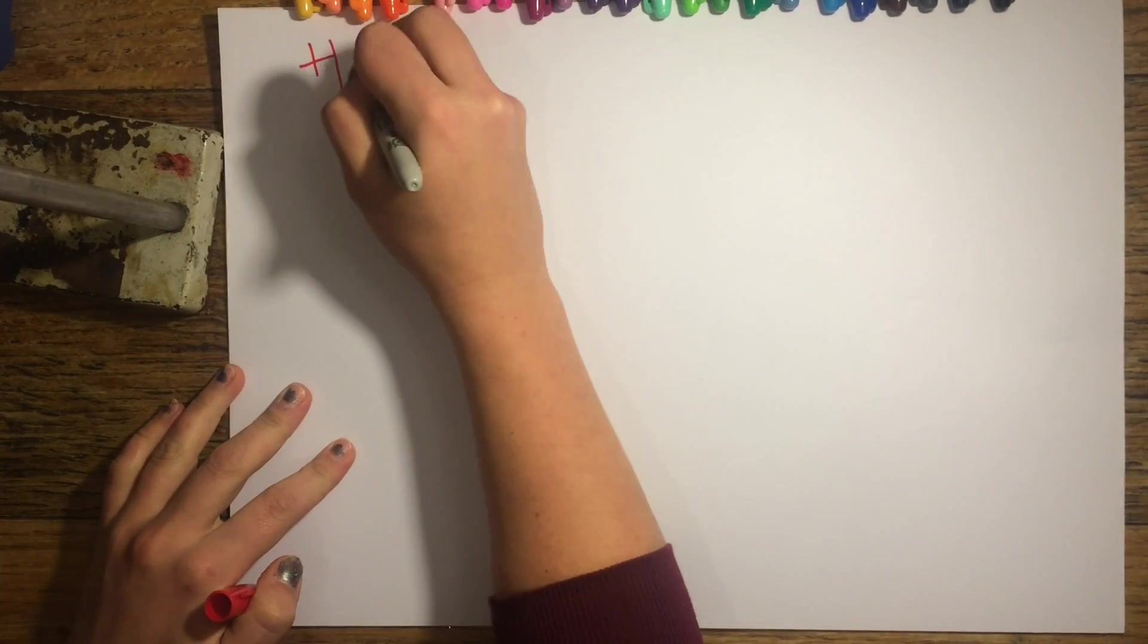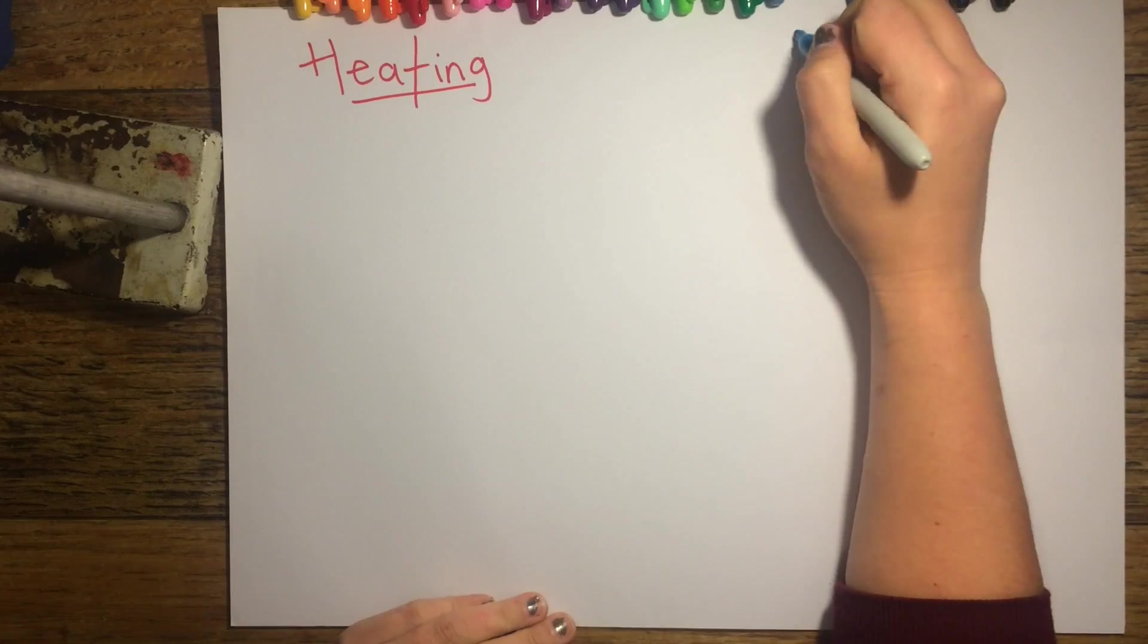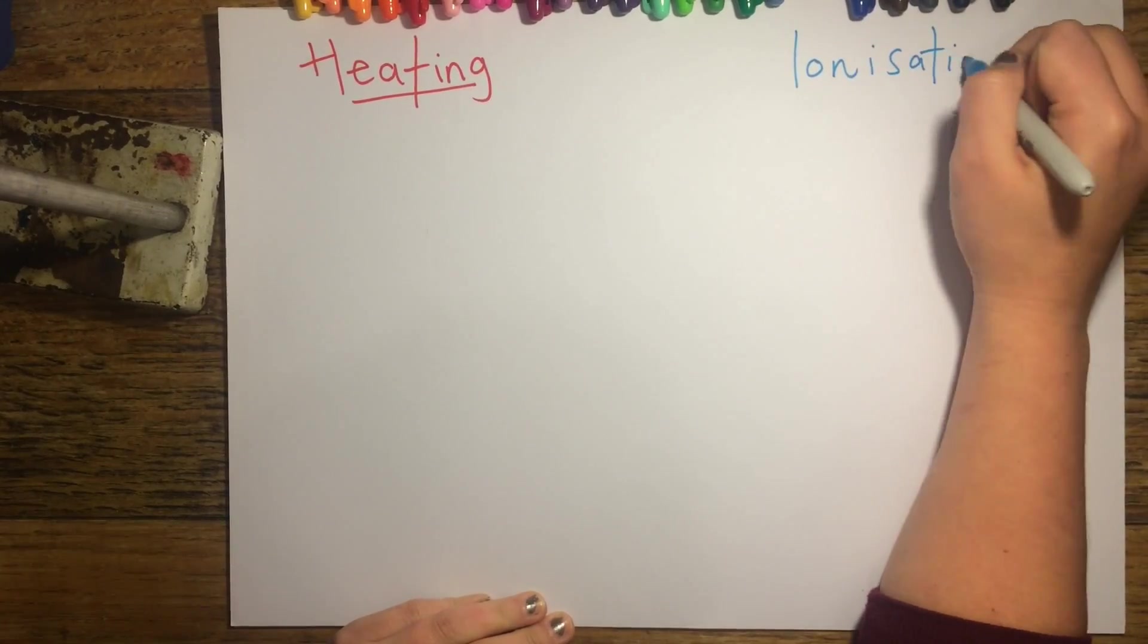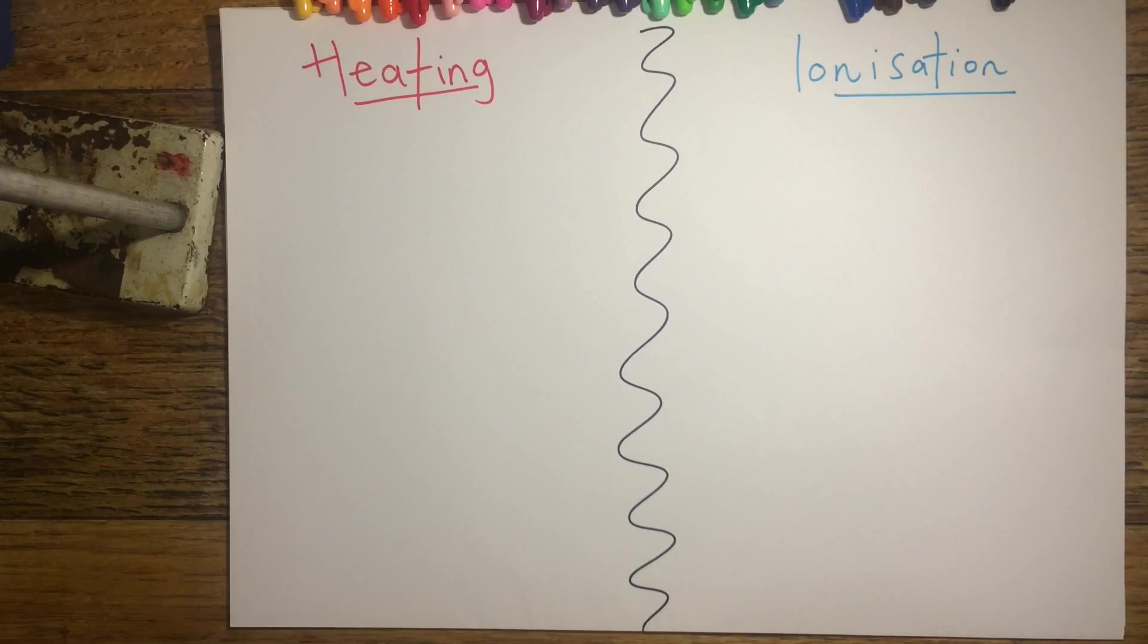This video is for P2, Radiation and Life, and is about the heating effect and ionisation. You need to know the differences between the two processes and the radiations that are associated with each of them.